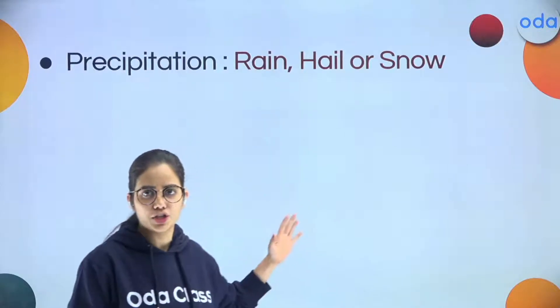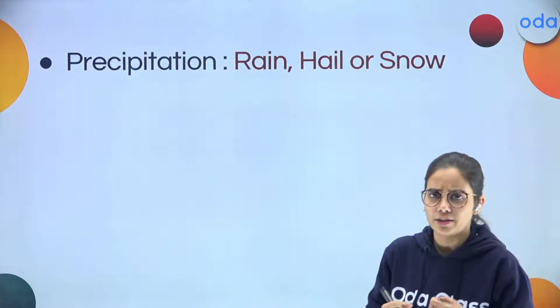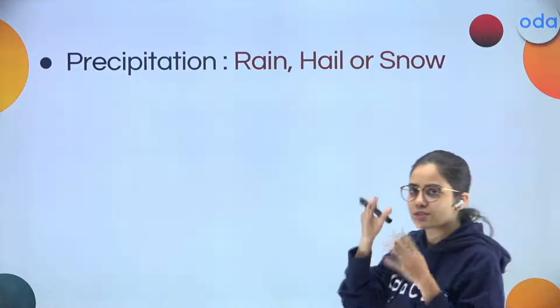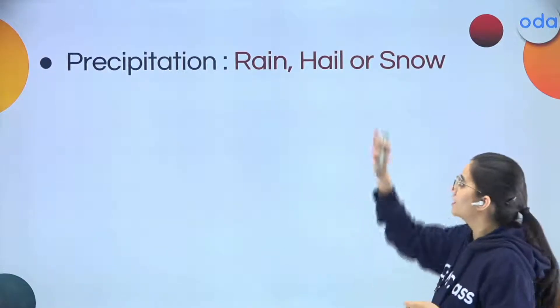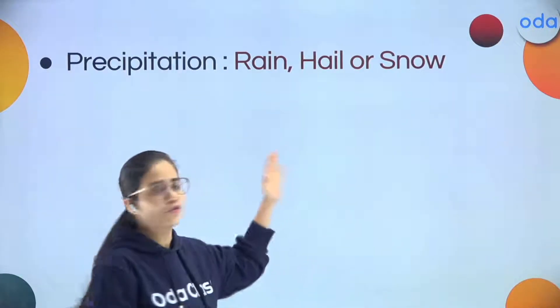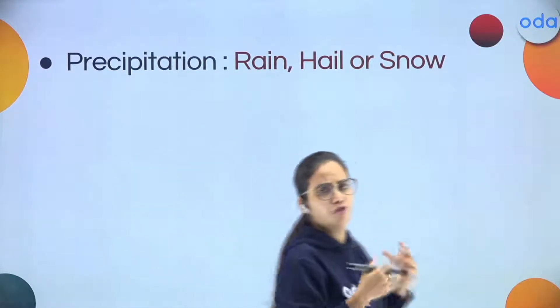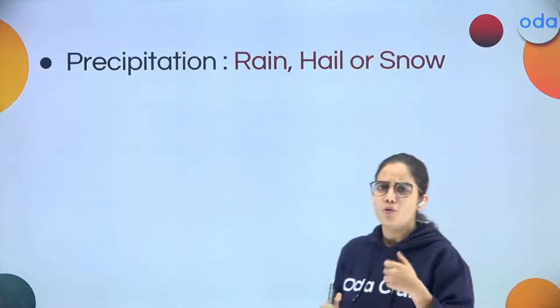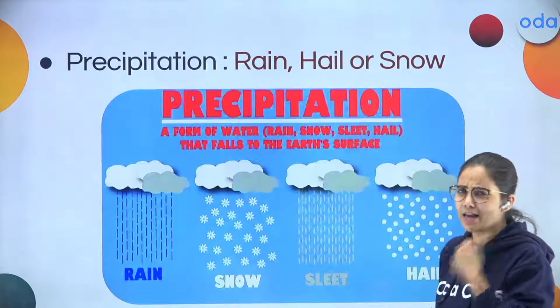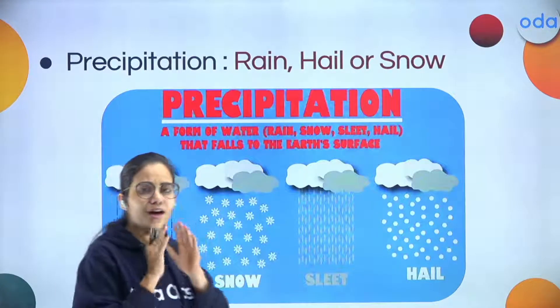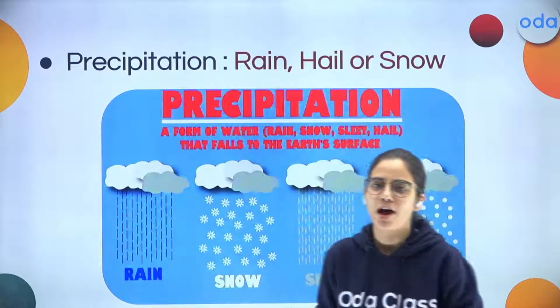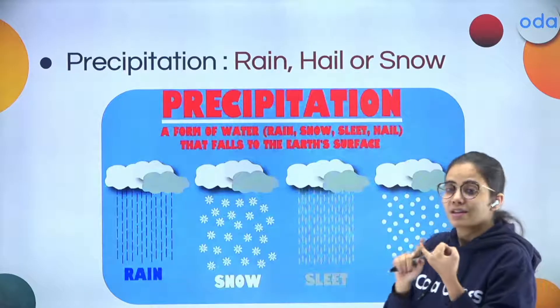Coming to the final step — precipitation. When clouds become heavy and can't hold water anymore, the water falls back down to earth. It can fall in any form: rain, hail, snow, or sleet. All of these are forms of water, and the idea is that water returns to the surface of the earth.